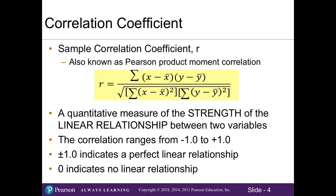When we cannot study an entire population, we will use sample data. We refer to this as the sample correlation coefficient, denoted by lowercase r, which is also called the Pearson product moment correlation. We can use Excel to determine the correlation coefficient based on our sample data, since we cannot simply eyeball a scatter plot. The correlation coefficient is a way to measure the relationship between two variables — specifically, the strength of the linear relationship between two variables.